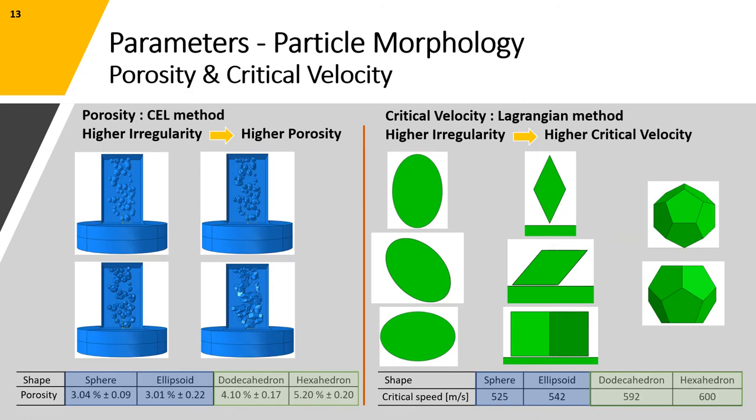We adjusted the previously discussed multi-particle CEL model to analyze the variation of porosity of deposits for different particle morphologies. As can be seen in the table on the left, we see an increase in the porosity as the irregularity of the particles increases. However, it is worth mentioning that the variation of porosity for spherical to ellipsoid particles is almost negligible.